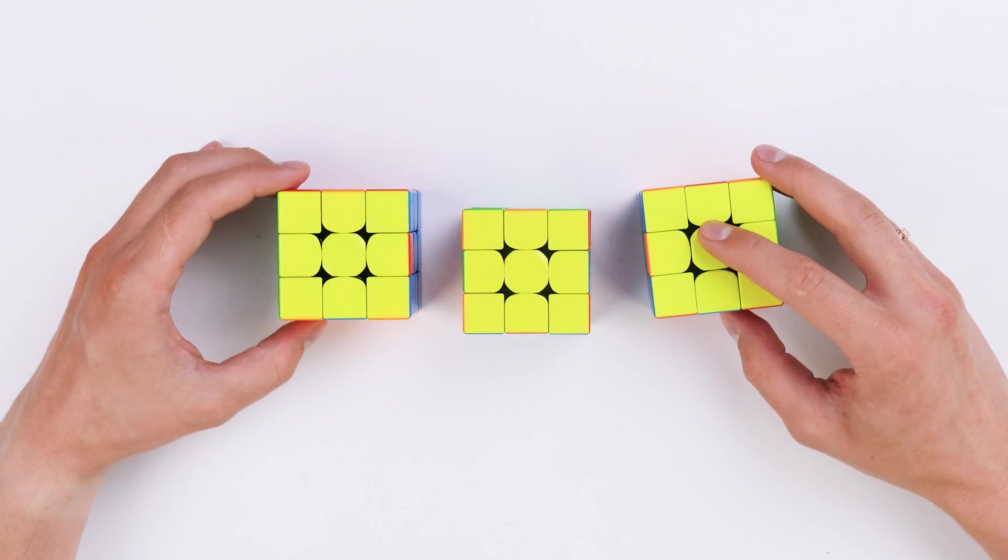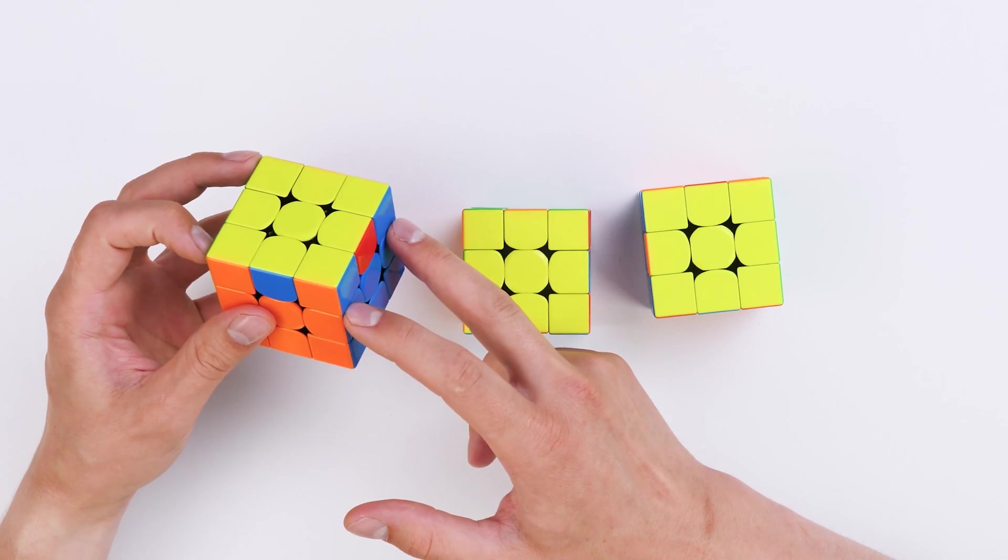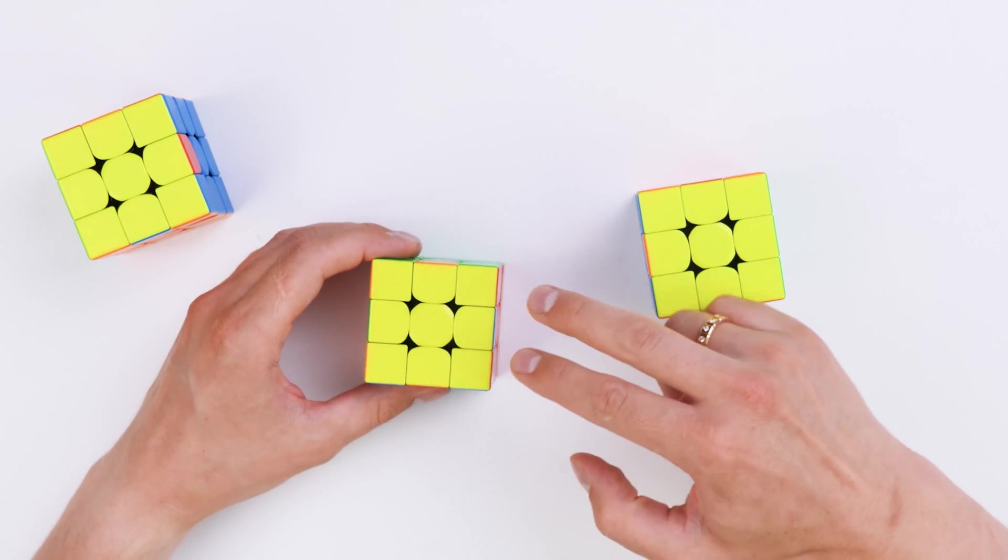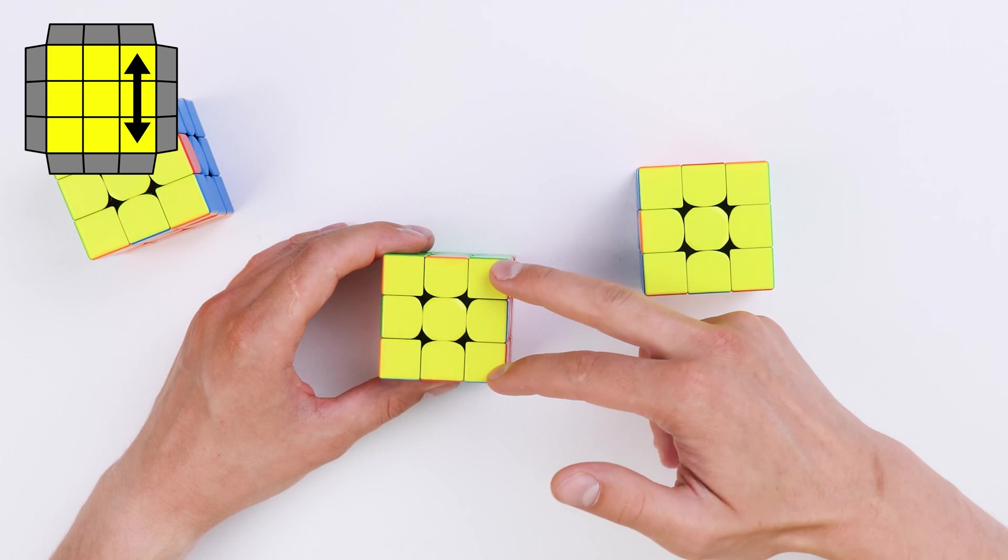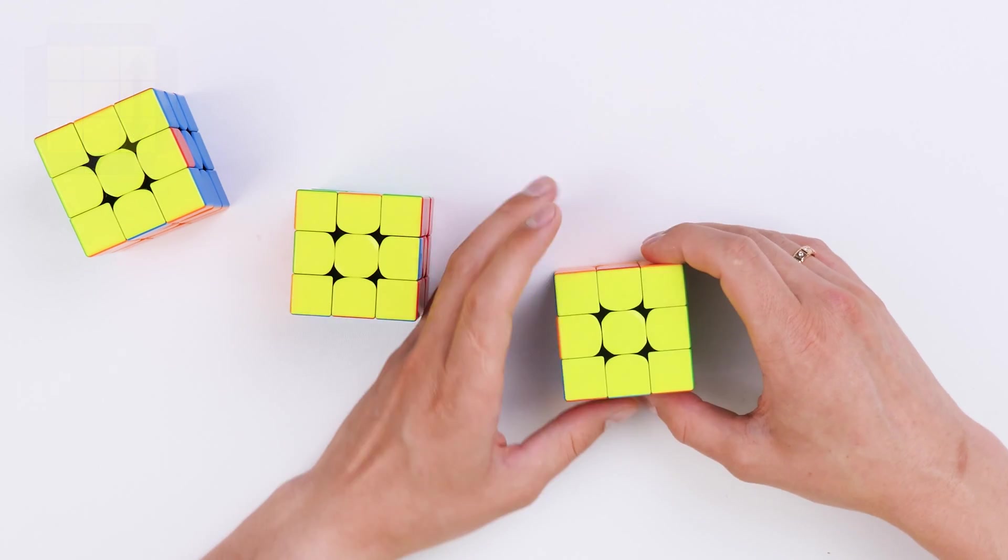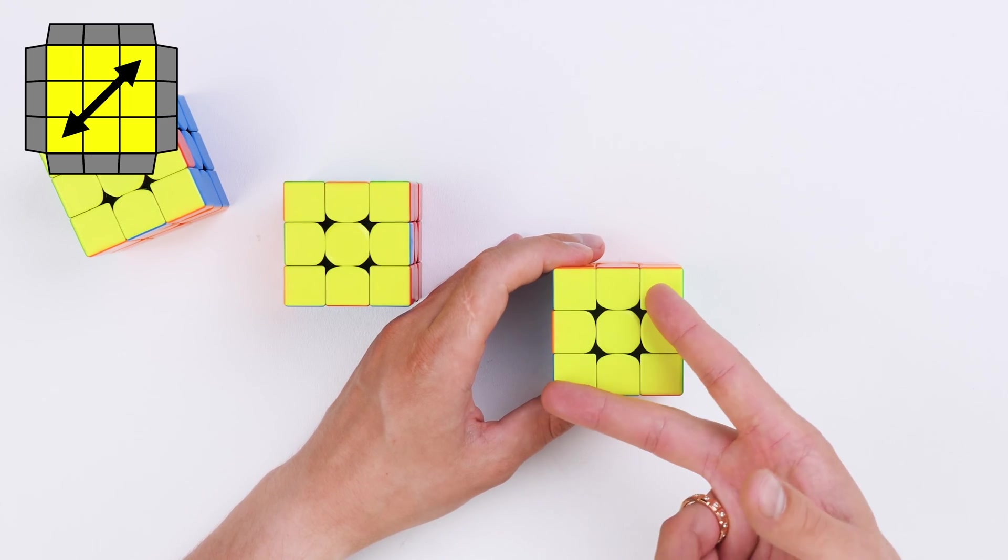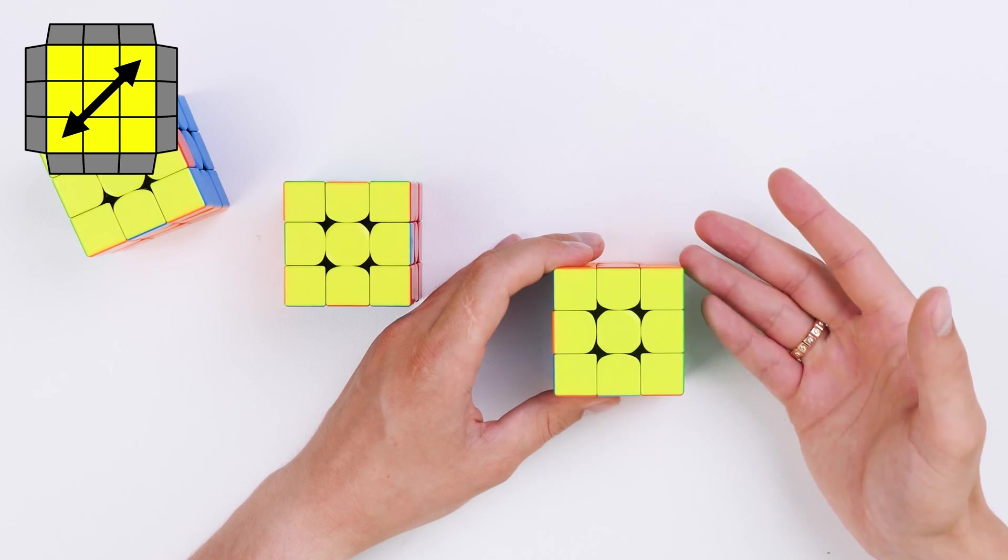So, to sum up. If we have everything standing in place, J-perm will not be needed. If we have two parts that we need to change this way, we do one J-perm. And if we need to change this situation, we do two J-perms.